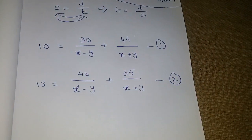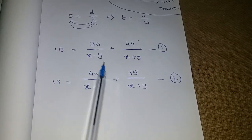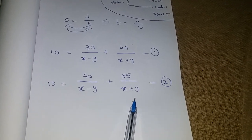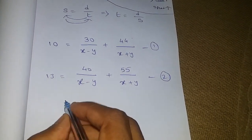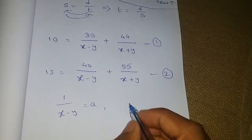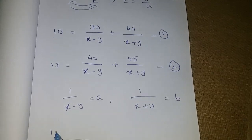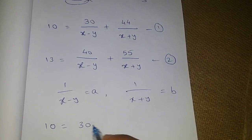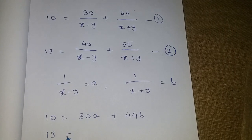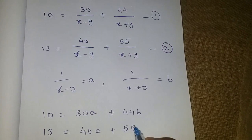In both equations we have 1/(x minus y) and 1/(x plus y) terms. So we substitute: let a = 1/(x minus y) and b = 1/(x plus y). The first equation can now be written as 10 equals 30a plus 44b. The second equation can be written as 13 equals 40a plus 55b. We now have newly formed equations number 3 and number 4.